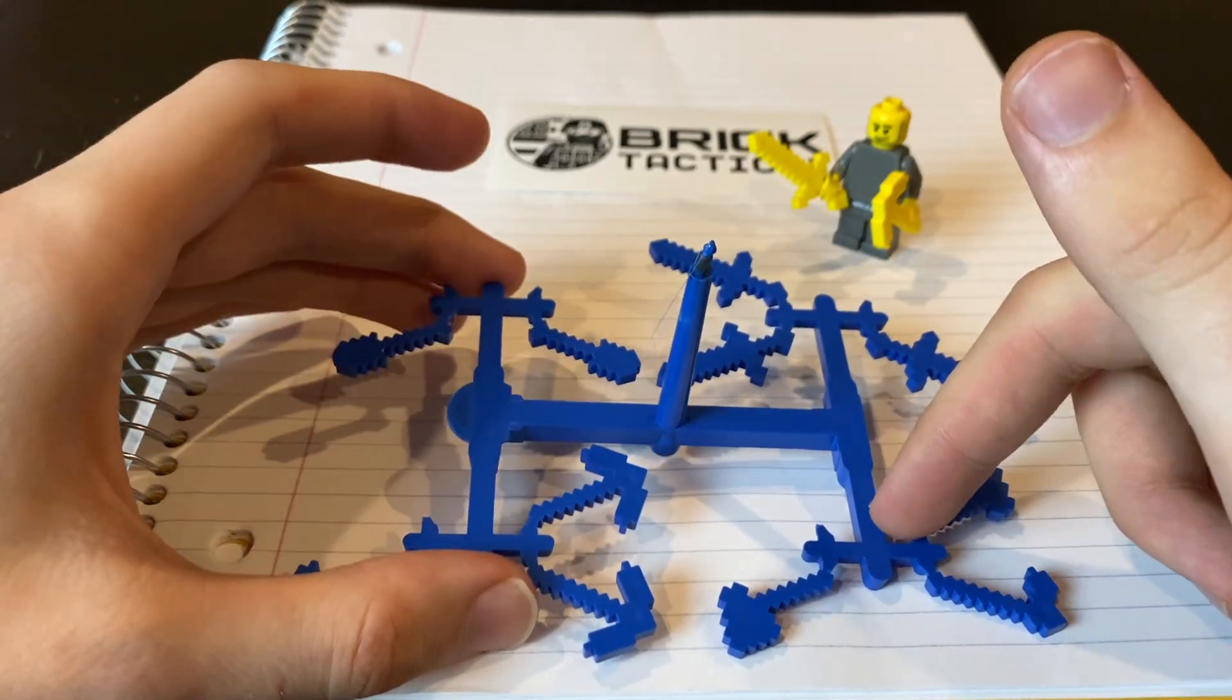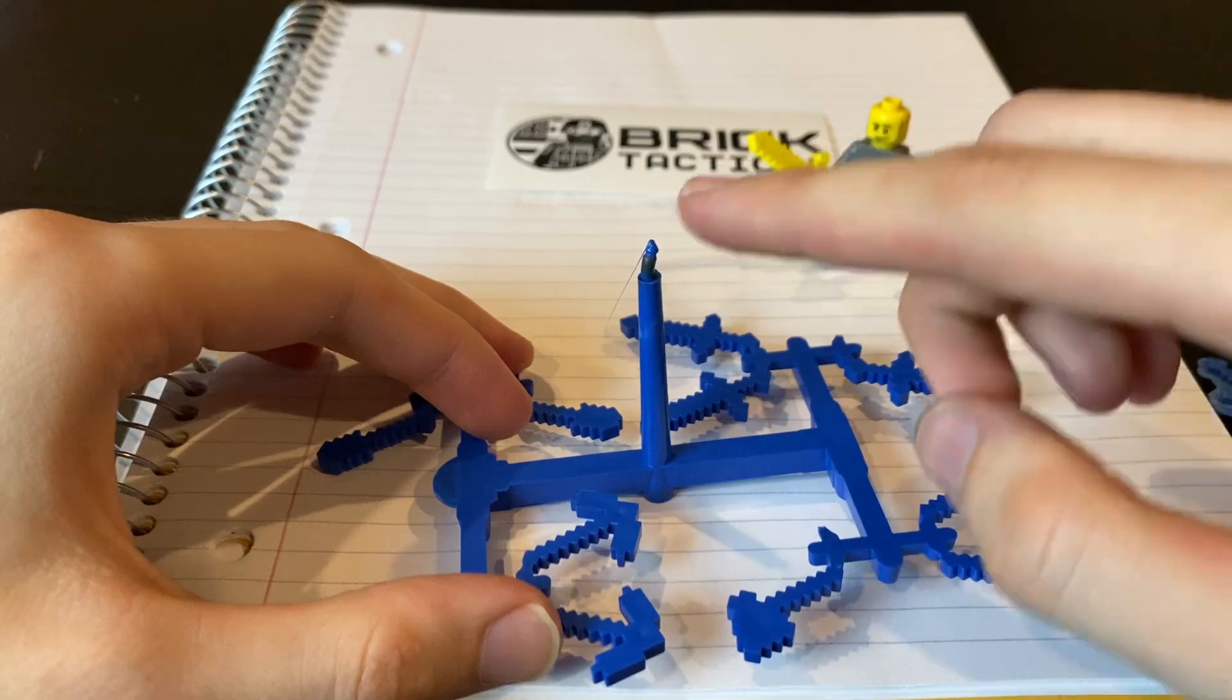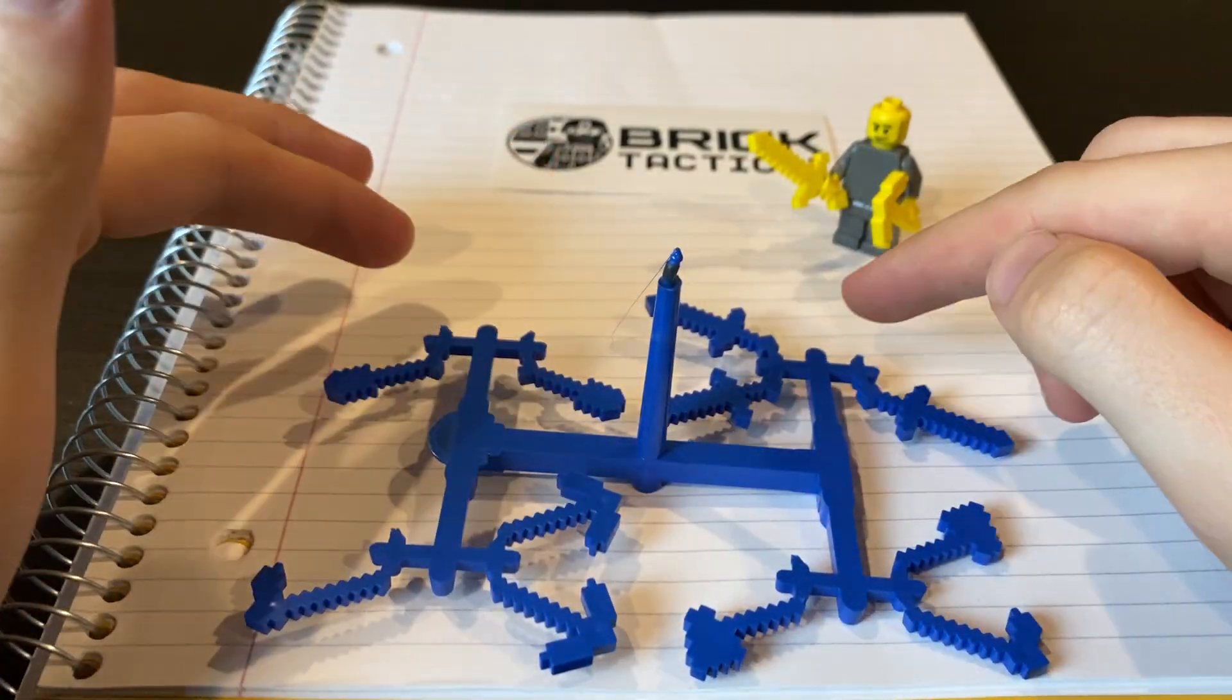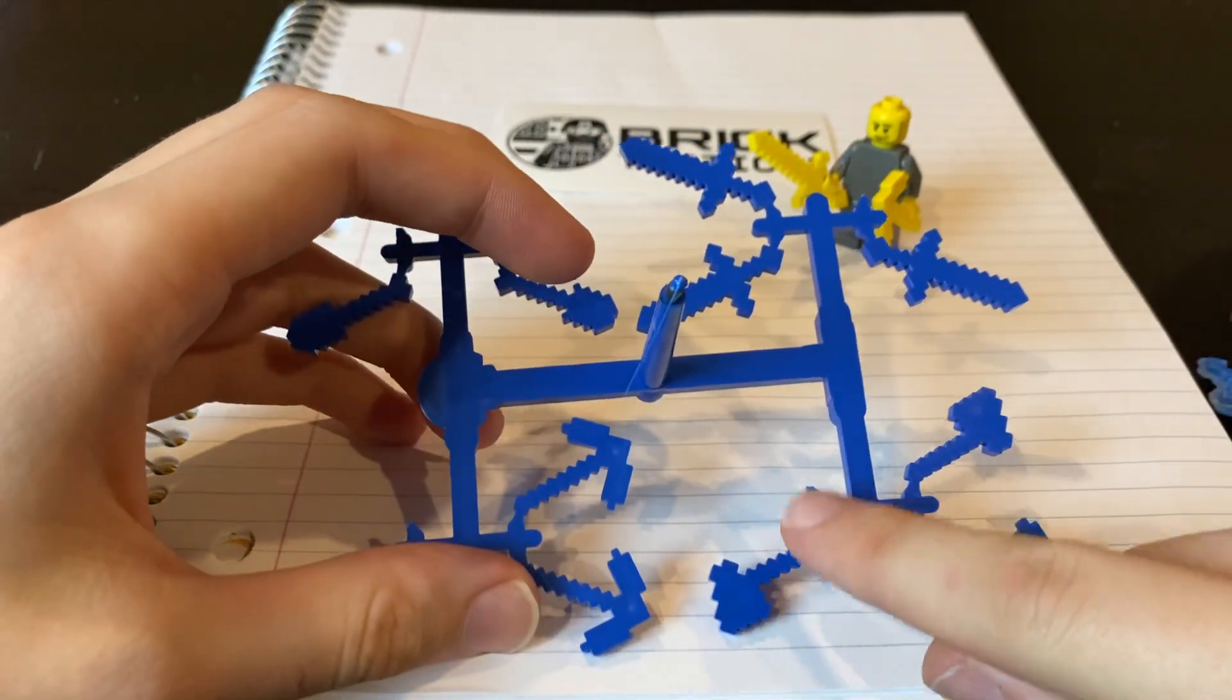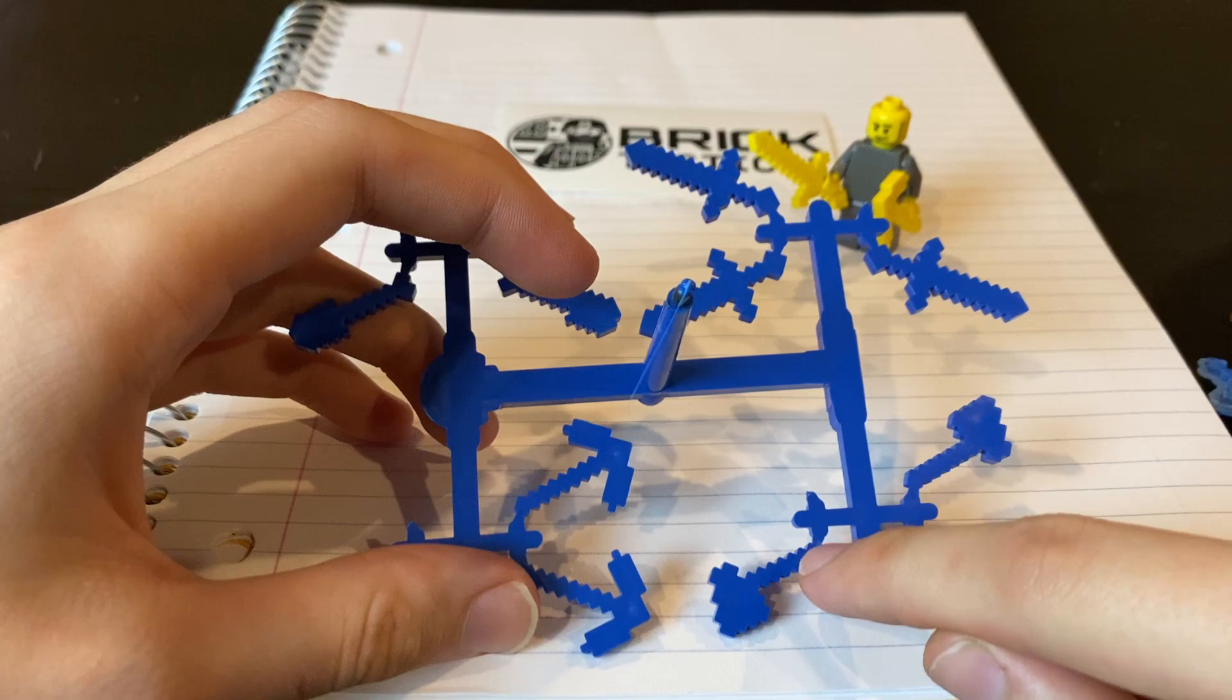These parts are the runners. So as you can see, basically the plastic comes in from here, goes down the sprue, and it's ran through the runners to the parts. Now, these little pieces here that connect the parts to the runner are called gates.